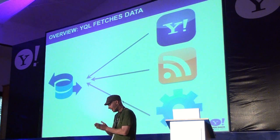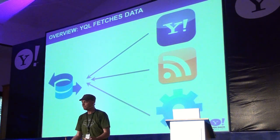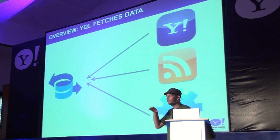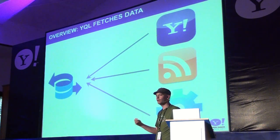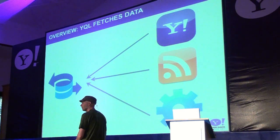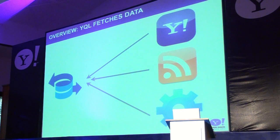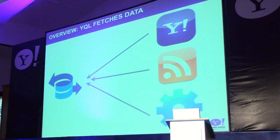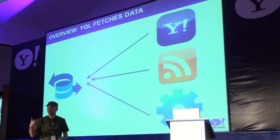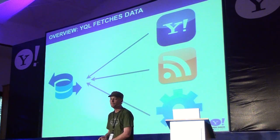YQL supports multiple different data feeds. The technology started as a skeleton key for Yahoo's own technologies — we have around 63 different APIs and services within Yahoo that we wanted to make available. API access can be painful, so we opened up all of our developer products within YQL, allowing you to access all that data through a standard method without having to deal with signing up for all these individual pieces.